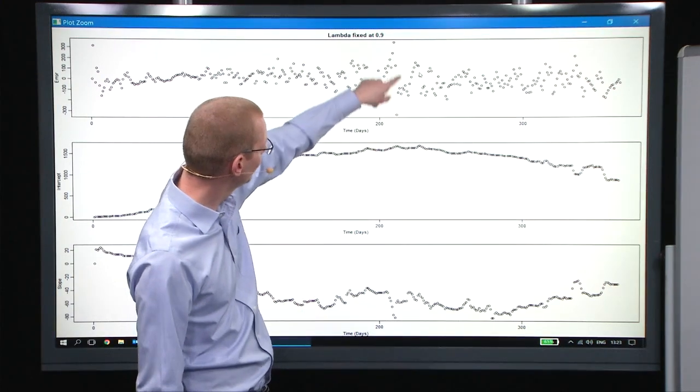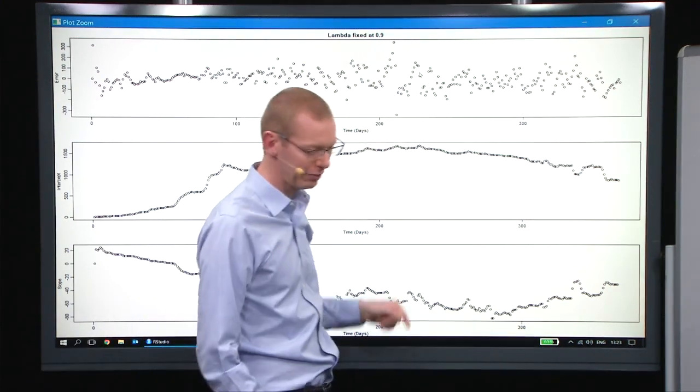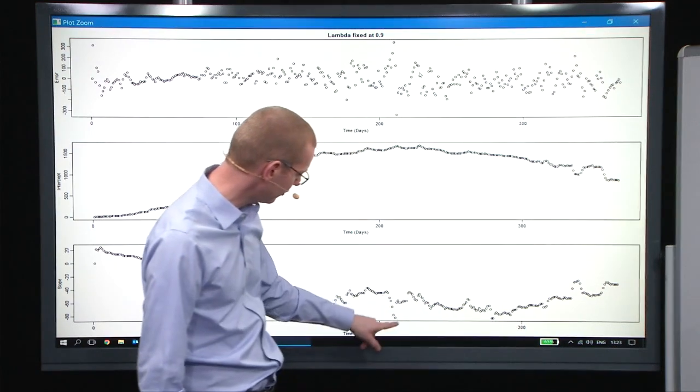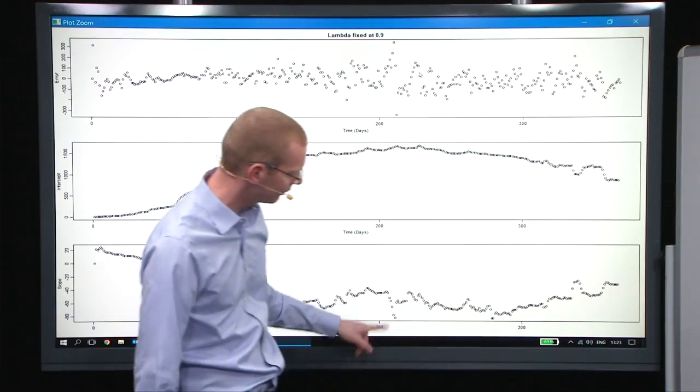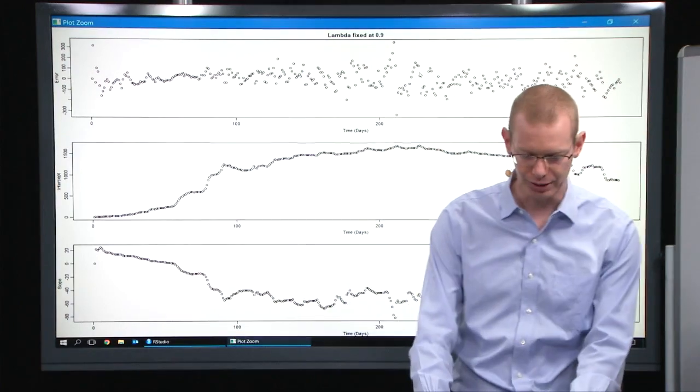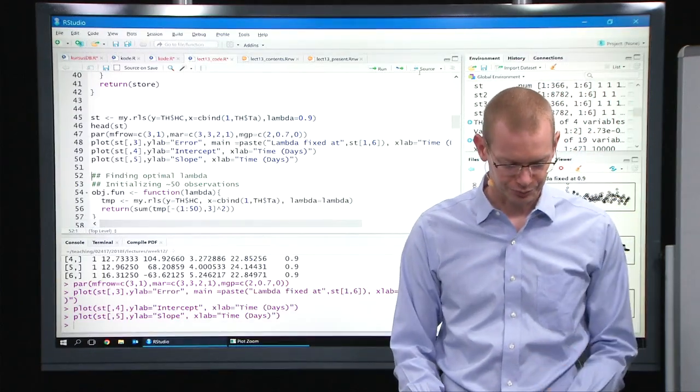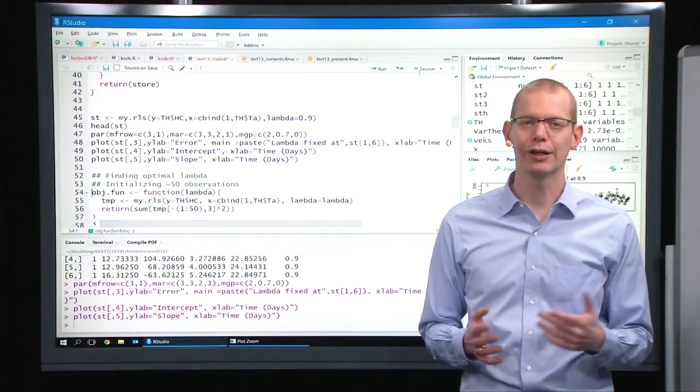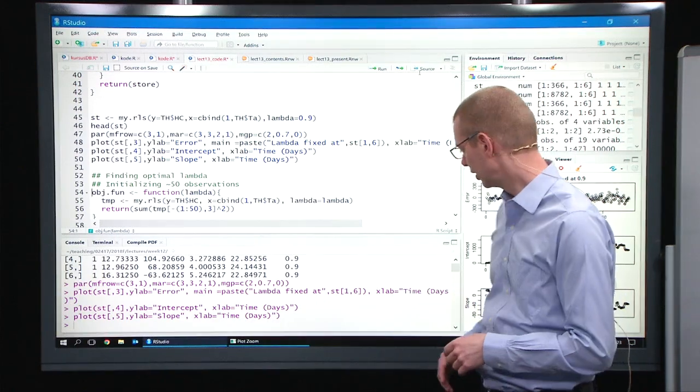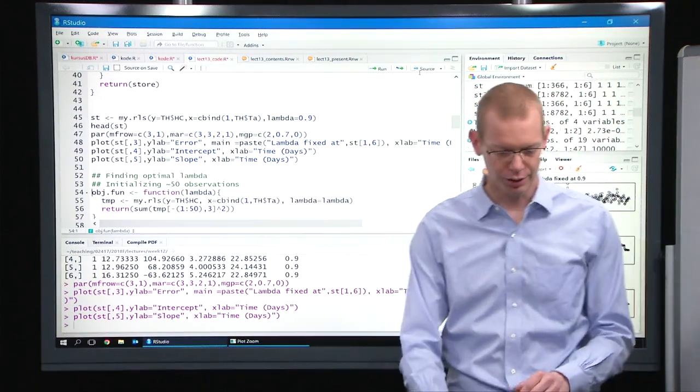We still see here in the middle, some odd things are happening. We also see it down here in the slope estimate, as something is happening, but we'll get back to that. Now, let's first find an optimal lambda. Let's ignore the first 50 estimates.